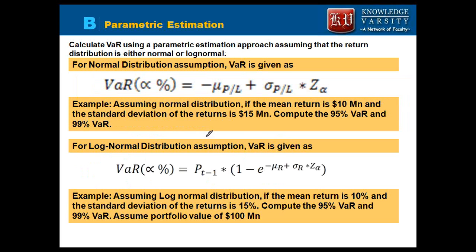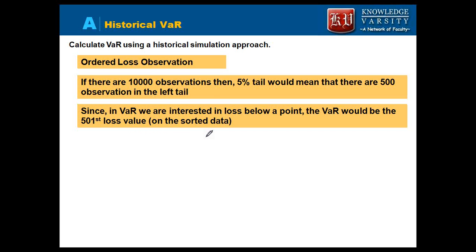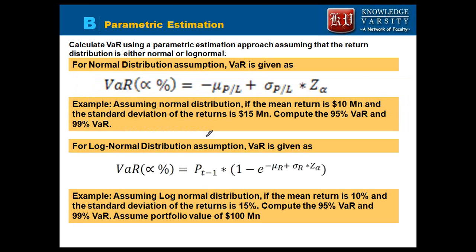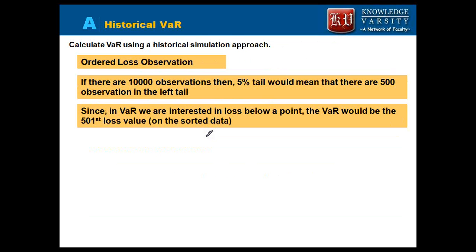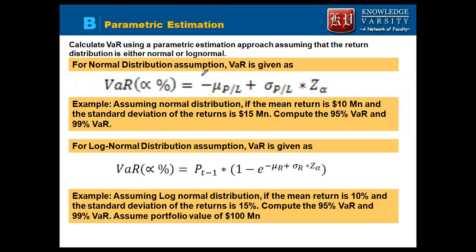In this reading we focus on historical VaR and parametric VaR. Historical VaR is a non-parametric measure because no assumptions are made about the distribution — it uses the actual, real distribution of returns.